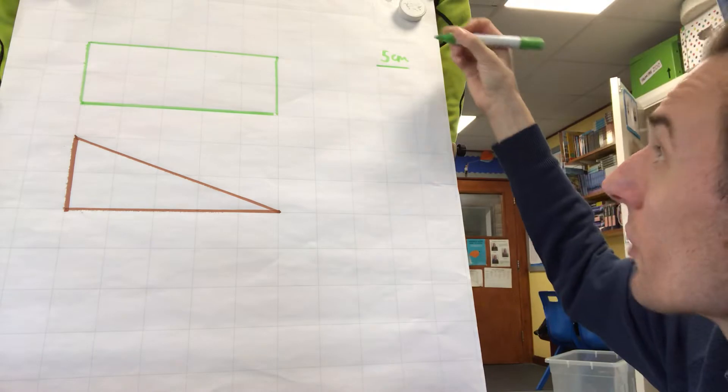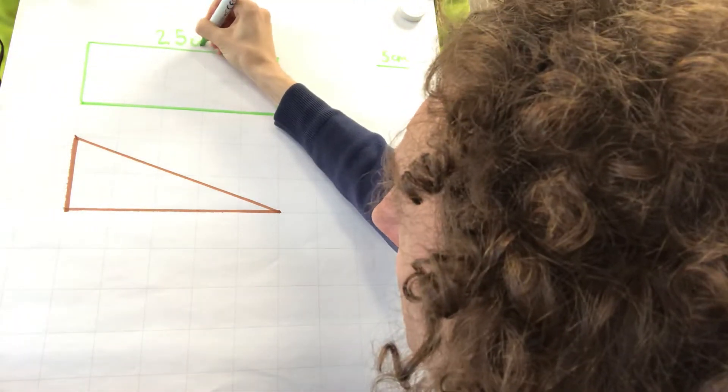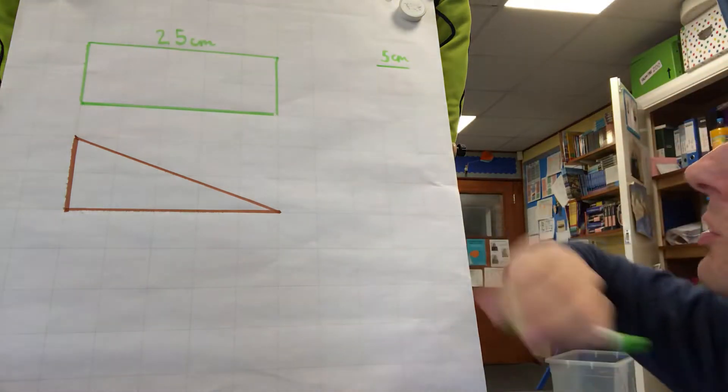5 times 5, so that would be 25 centimetres. And a width of 2 squares, 2 fives, are 10 centimetres.